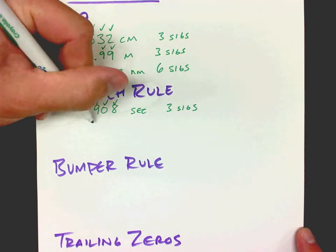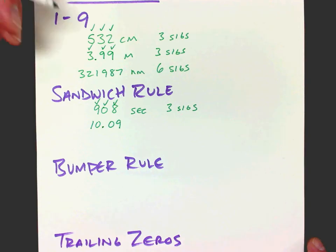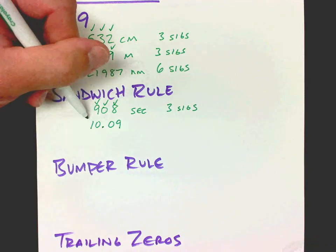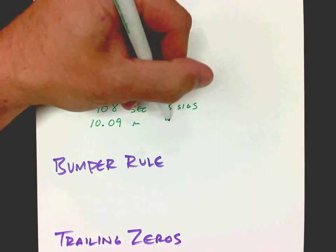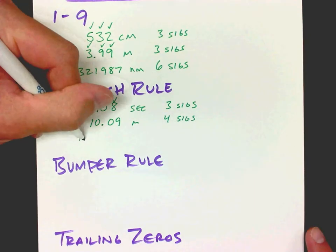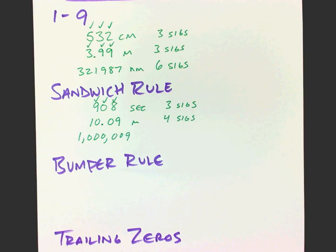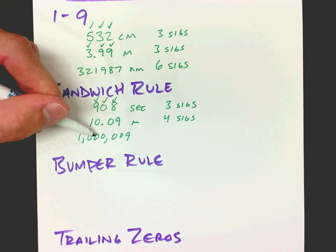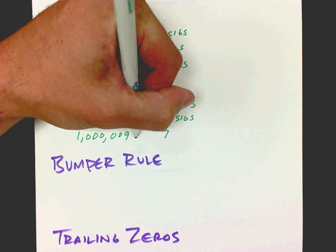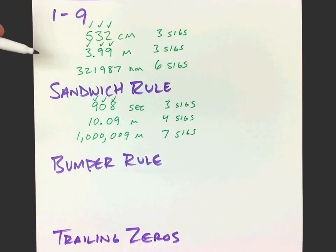The decimal point doesn't change the sandwich rule at all. If we put a decimal point in the center, the two zeros are surrounded by the 1 and the 9, so this would have 4 sigs. You can put all kinds of zeros in there — same thing still applies. You still have a 1, a 9, and all of those zeros sandwiched in between. That would be 7 sigs. That is the sandwich rule.